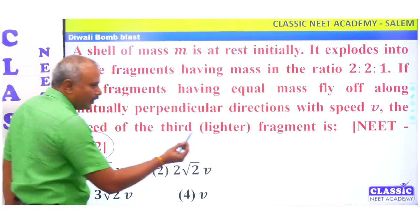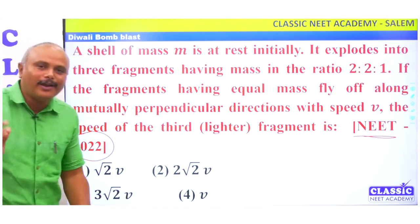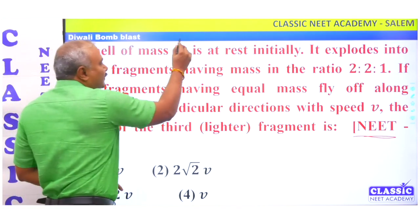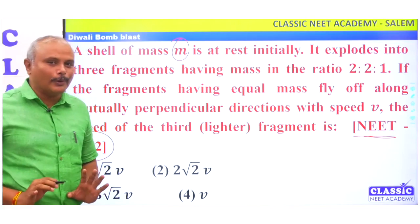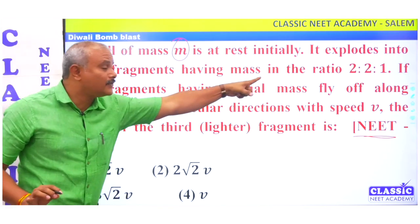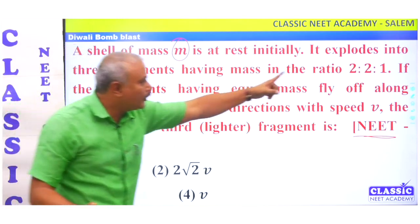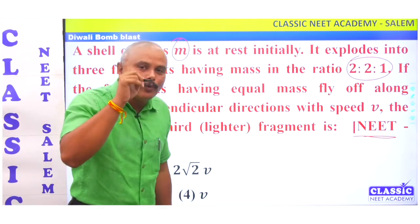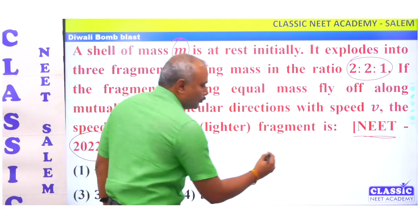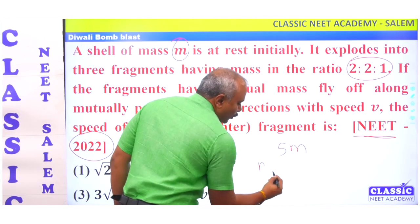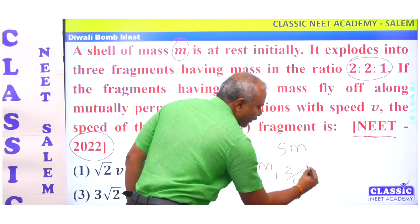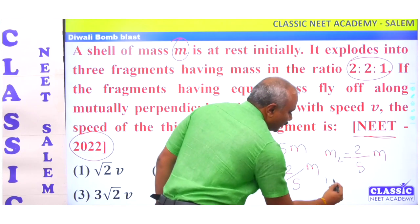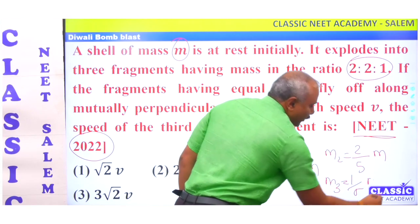Let's look at a 2022 exam question. A shell of mass M is at rest initially, so initial momentum is zero. It explodes into three fragments with mass ratio 2:2:1. The total ratio is 5 parts, so M1 equals 2/5 M, M2 equals 2/5 M, and M3 equals 1/5 M.